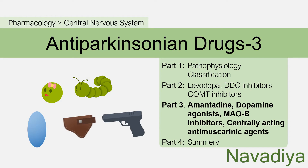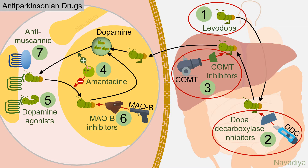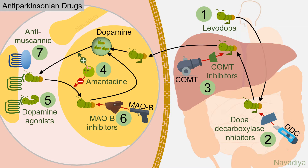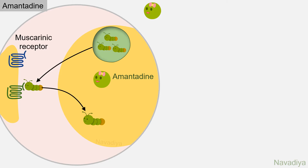Welcome back friends. We are seeing anti-parkinsonian drugs. We have already seen levodopa, dopa decarboxylase inhibitors, and COMT inhibitors in the last video. Now in this video we will see amantadine, dopamine receptor agonists, MAO-B inhibitors, and centrally acting anti-muscarinic agents. So let's start with amantadine.